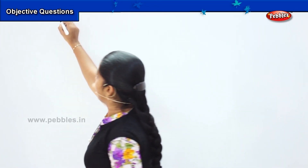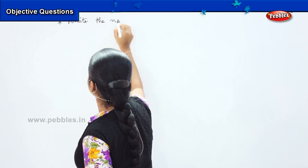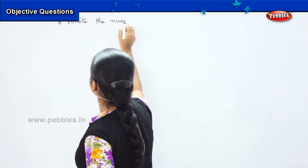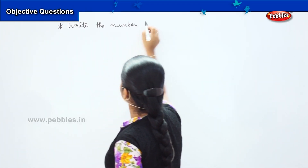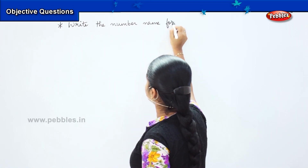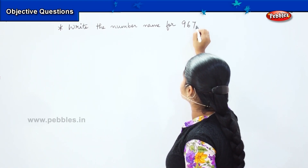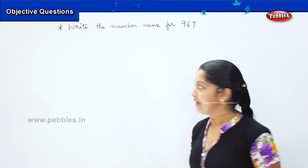Now I am going to ask you a few more questions on the same pattern, which is the number name pattern. Here comes our next question: what is the number name for the number 967?